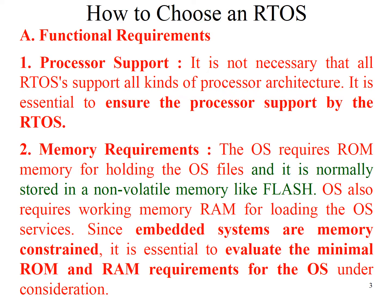The second functional requirement is memory requirements. The OS requires ROM for holding the OS files, and when the embedded system is in operation, the OS also requires working memory known as RAM. RAM is used for loading the OS services. In short, the OS requires both RAM and ROM.